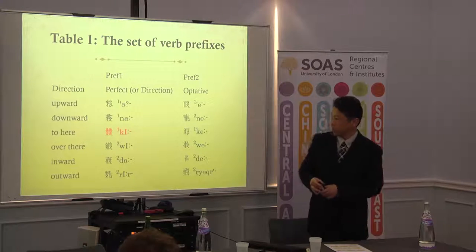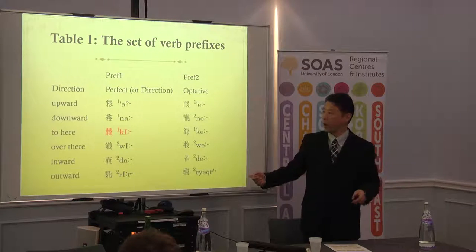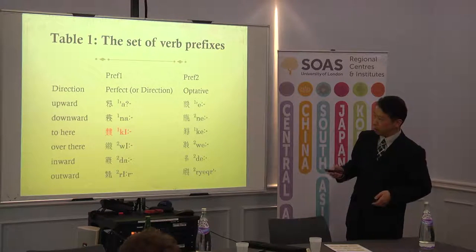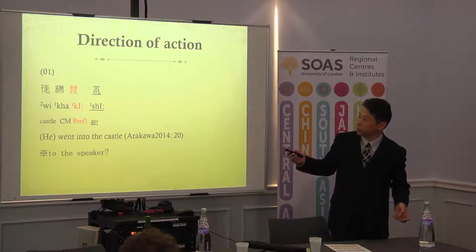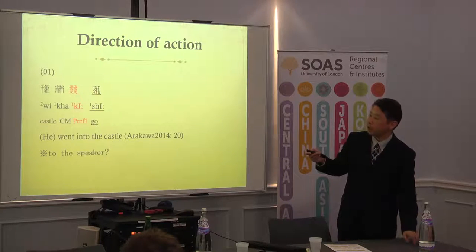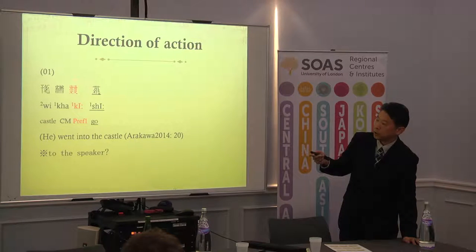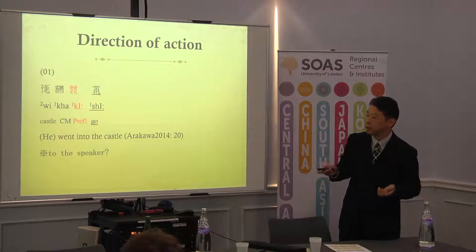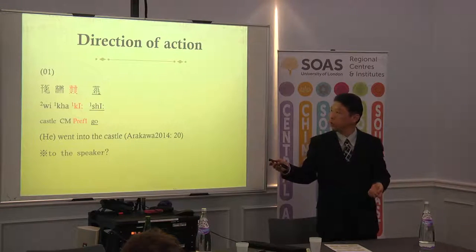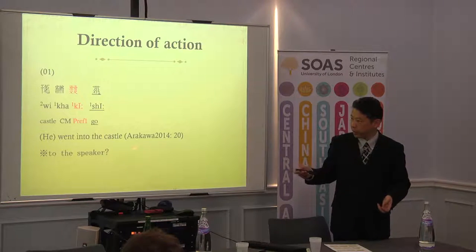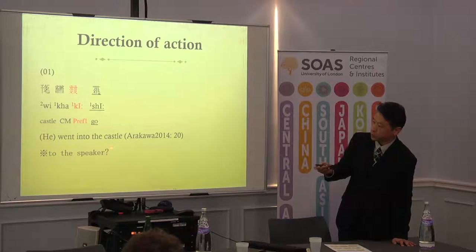Please remember this prefix one — from my reconstruction I call it 'qi'. It means a case marker, and this is Prefix one, and these are main vowels. The vowels are underlined, and the element in question I emphasize in red color. Actually, it's not so easy to decide the direction of the motion, but here probably I suggest this meaning to the speaker: 'he went into the castle.'